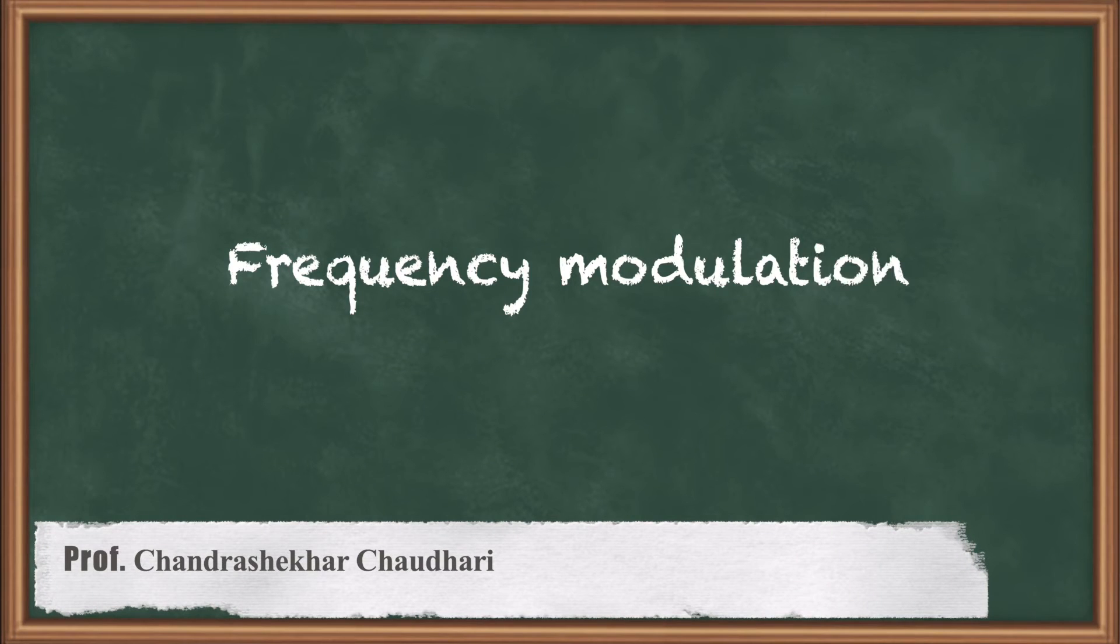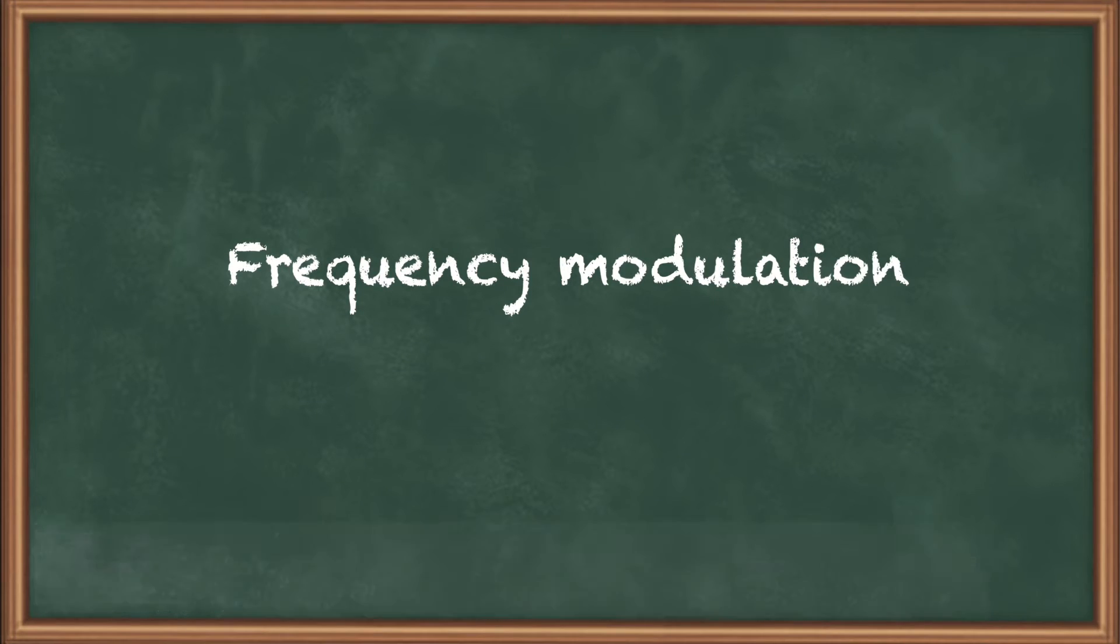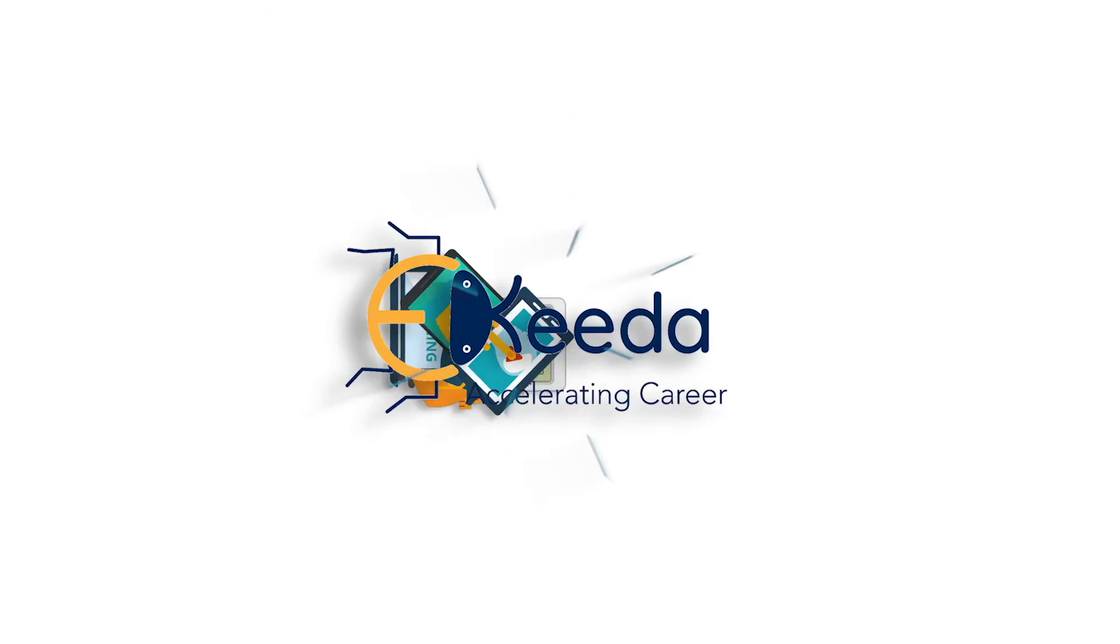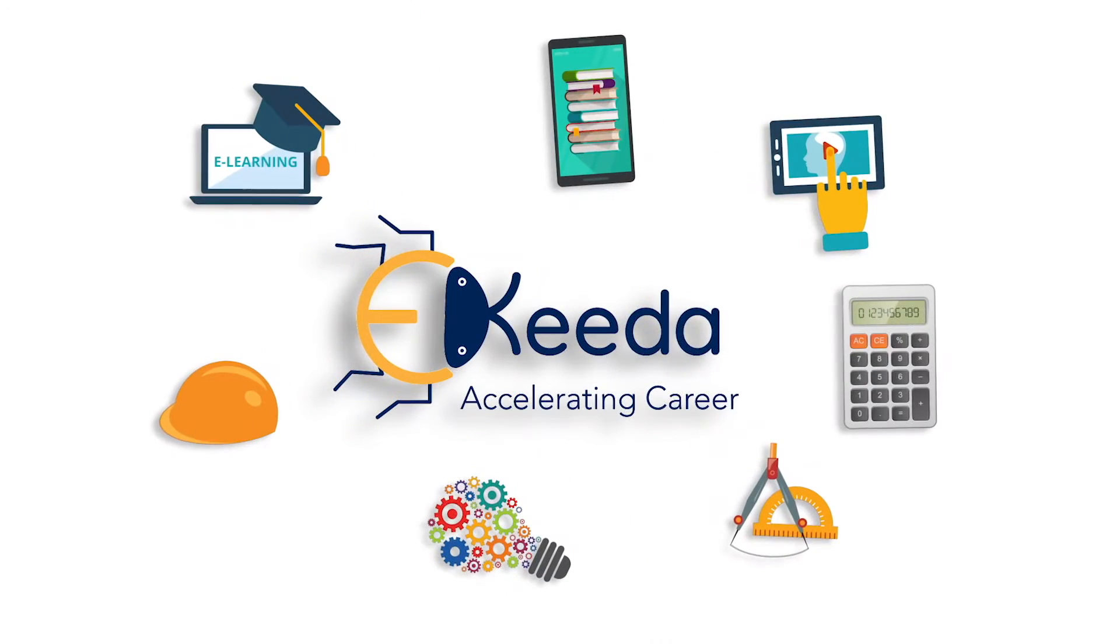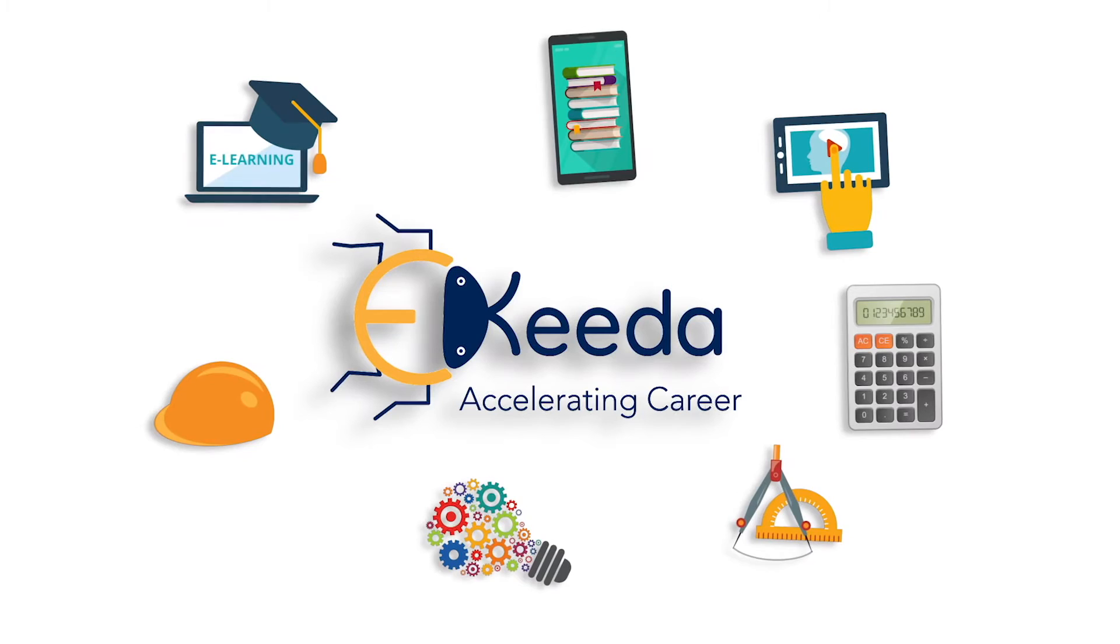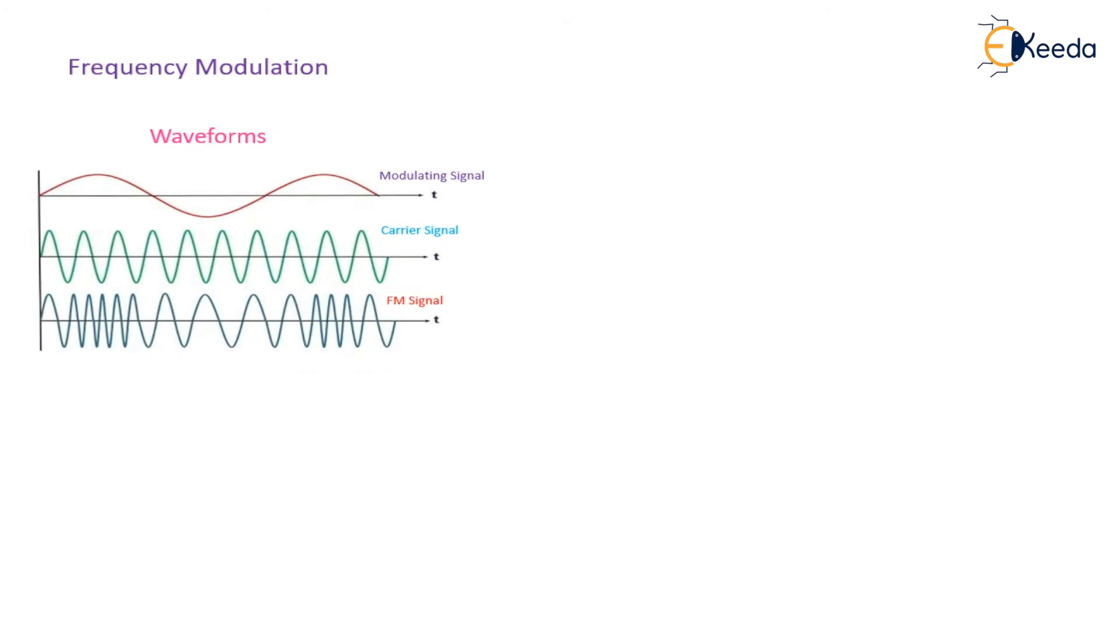Hello friends, now we will see the frequency modulation. The waveforms of frequency modulation: the amplitude of the modulating signal is indicated by this sinusoidal signal.